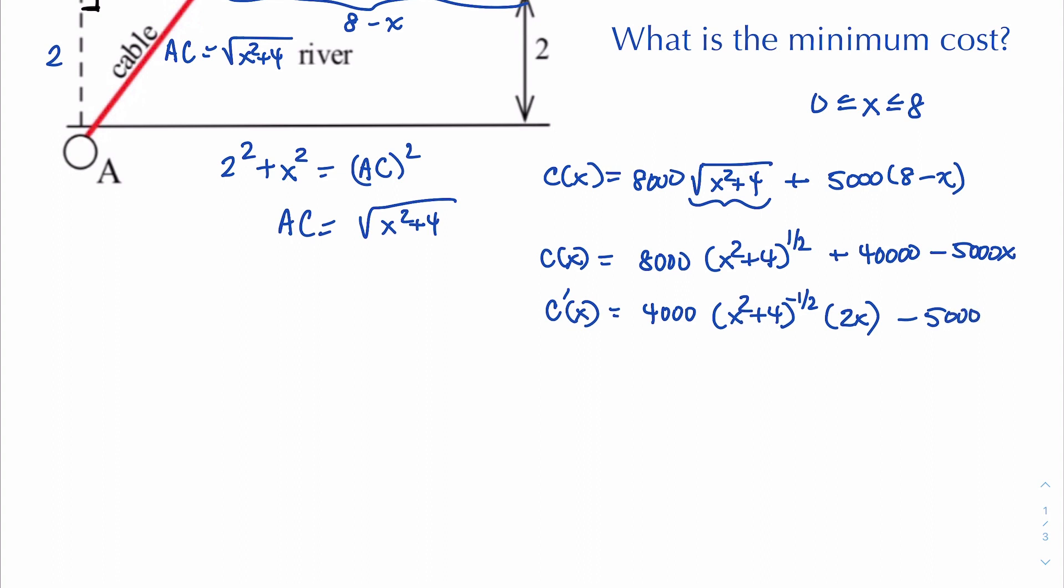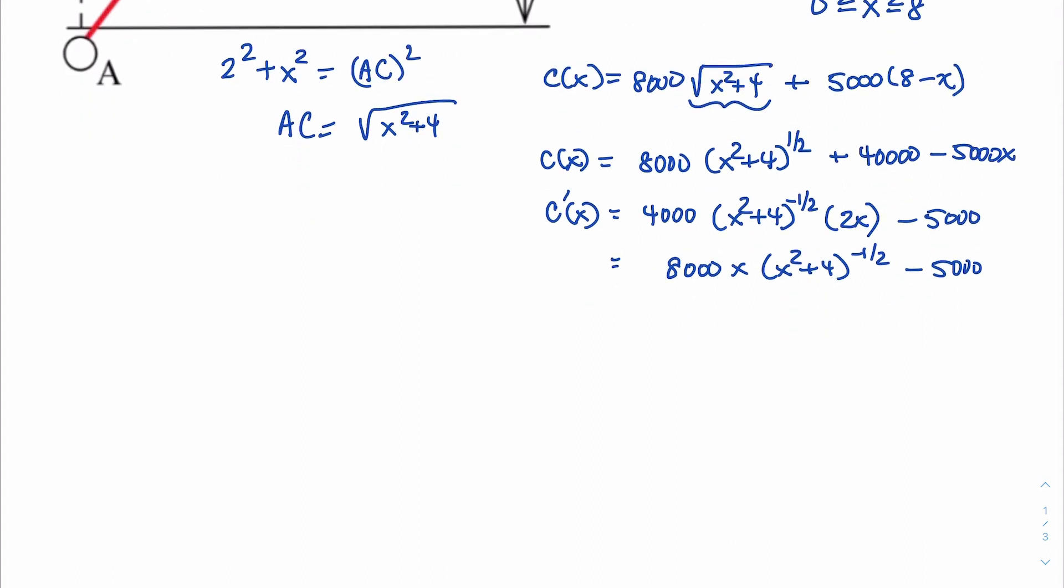And we're going to clean up the derivative first before we do anything else with it. So this is 8,000x times x squared plus 4 to the negative half minus 5,000. And I'm going to rewrite the negative one-half power as dividing by the square root. Remember that would be over the one-half power and then a one-half power means square root. So you have 8,000x over square root of x squared plus 4 minus 5,000.